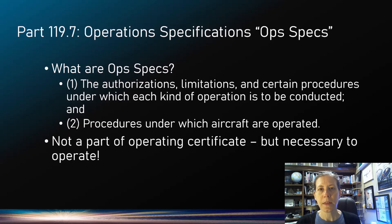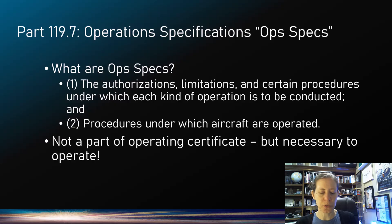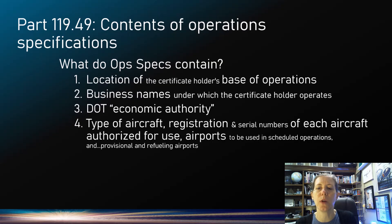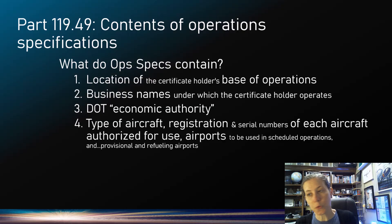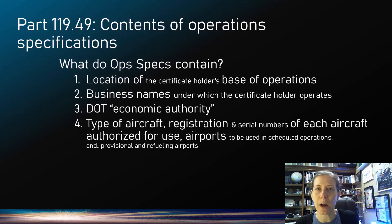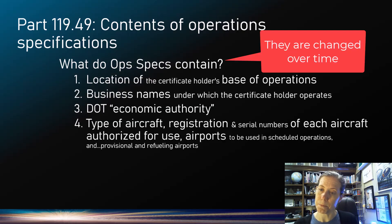Things in ops specs include authorizations required for that air carrier to conduct its operations, and procedures under which certain parts of their operations are going to be conducted. It's not part of the air carrier's certificate, but they have to have ops specs to operate. Required items include where they are located — the FAA needs to be able to find you — and the business names under which your company has been approved to operate. You can't just change your name without updating your ops specs, though they can be updated in an organized fashion.